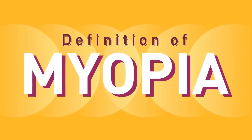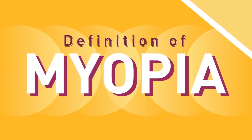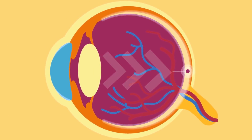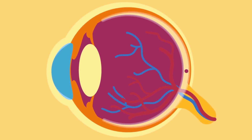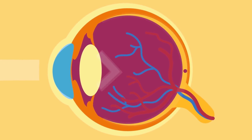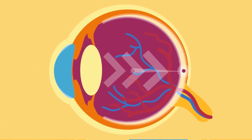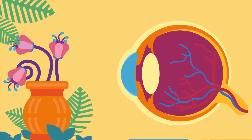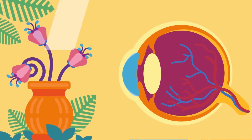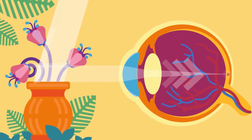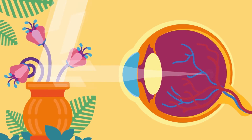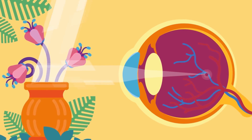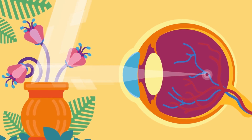Definition of myopia: it is a form of refractive error — inability to refract, bend, and focus light rays properly — in which parallel rays of light coming from a distant object, after entering the eye, are focused in front of the retina instead of on the retina, with eye muscles at rest.